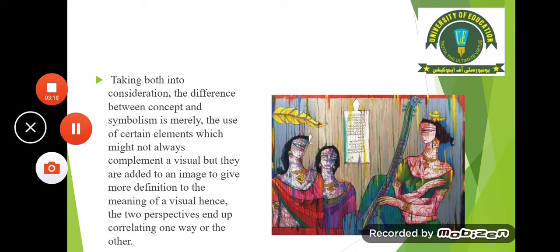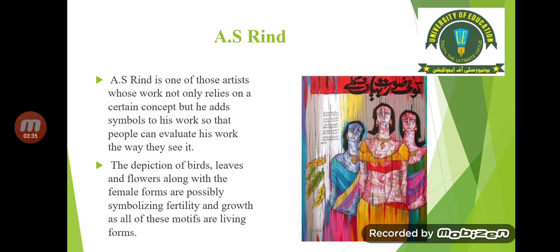As you can see in this painting, we are looking at different symbols and elements. This is the artist A.S. Rind. He is one of those artists whose work not only relies on a certain concept but he adds symbols to his work so that people can evaluate his work the way they see it.